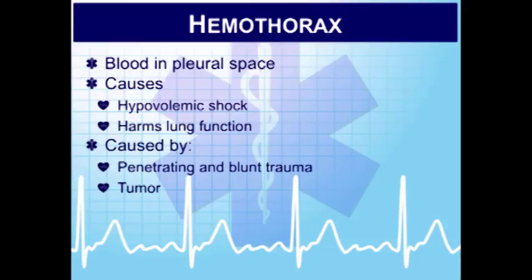Management includes airway management and high flow oxygen — this is a load-and-go situation. Fluid resuscitation targeting a blood pressure of at least 90 mmHg or a mean arterial pressure of 65. However, be careful not to give too much fluid or raise the blood pressure too high, as this can dislodge clots and worsen bleeding. The patient can also develop a tension pneumothorax from the hemothorax.